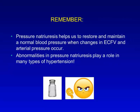The take-home clinical points here are that pressure natriuresis helps us to restore and maintain a normal blood pressure when changes in ECF volume and arterial pressure occur, and abnormalities in pressure natriuresis play a role in many types of hypertension. If you understand how this interesting renal phenomenon works, you should be in good shape to read more and understand why people become hypertensive and why we treat hypertension in the ways we do in order to help correct or compensate for abnormalities in pressure natriuresis and their consequences.